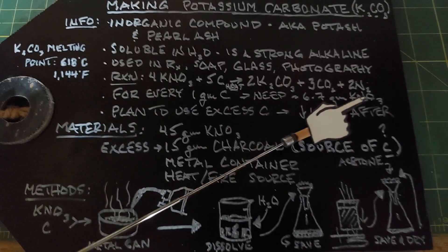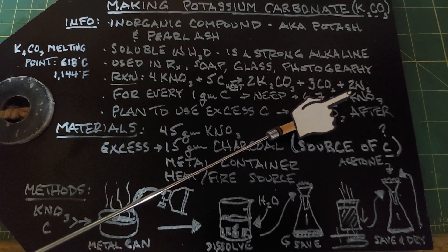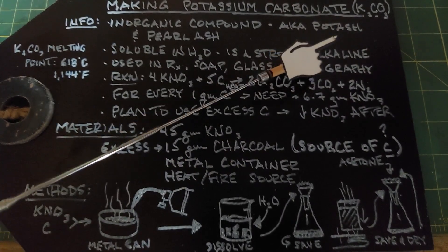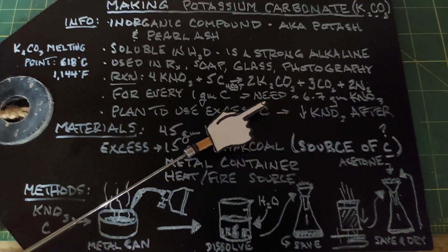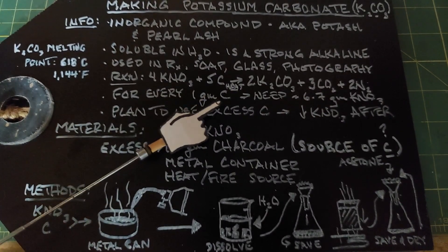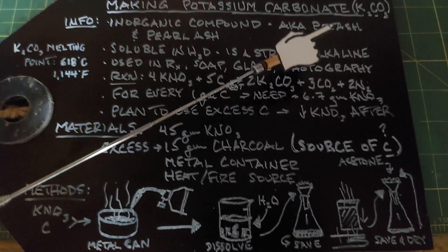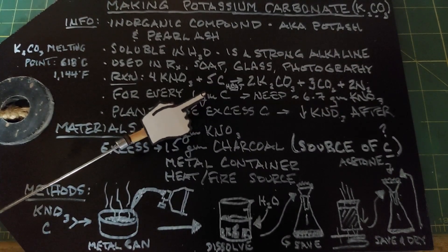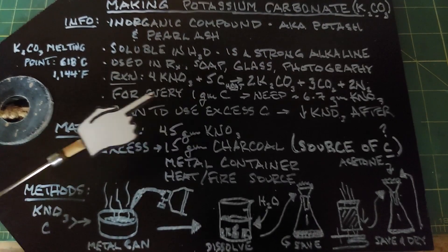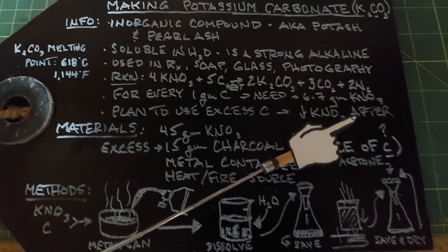When mixing charcoal with potassium nitrate, you want enough carbon to react with all the potassium nitrate. If you don't have enough, you'll have leftover potassium nitrate mixed in with your potassium carbonate, which is difficult to separate. Using excess carbon ensures all the potassium nitrate reacts, and since carbon doesn't dissolve in water, it's easy to separate the carbon from the potassium carbonate, giving a much purer product.